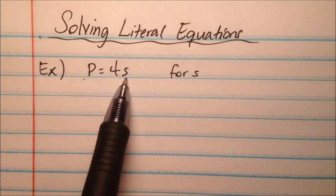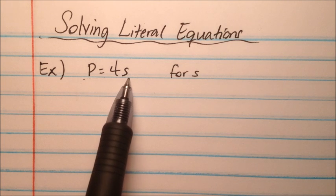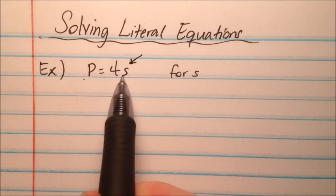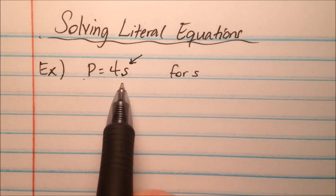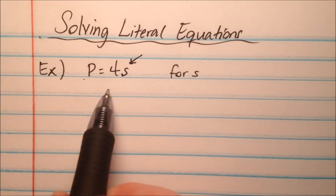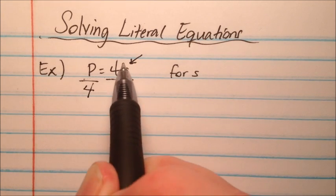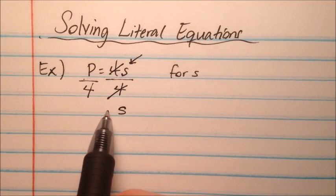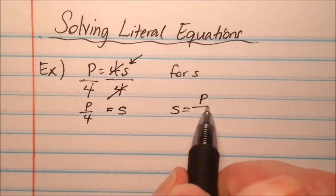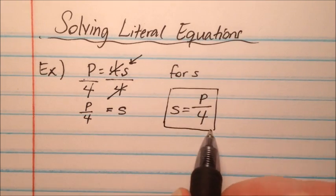In this first example, we have the formula for perimeter of a square: P equals 4 times the length of a side. Instead of solving for P, we're going to solve for s. We want to get s all by itself. We can use the properties of equality to isolate a particular variable. This 4 is being multiplied by s and there are no other terms on this side, so I'm going to divide both sides by 4. That gets rid of the 4 with the s, leaving P over 4 on the left and s on the right. Using the symmetric property of equality, s equals P over 4.